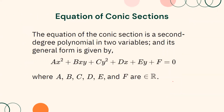The equation of the conic section is a second-degree polynomial in two variables, and its general form is given by ax² + bxy + cy² + dx + ey + f = 0, where a, b, c, d, e, and f are elements of real numbers. However, for our preceding discussions, we will consider b equals zero, and the term xy will not be present.